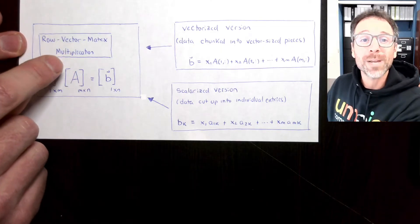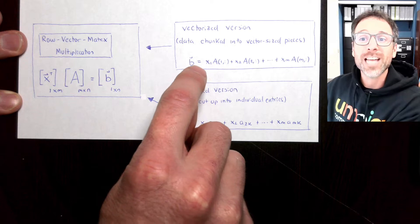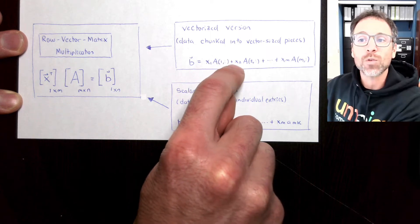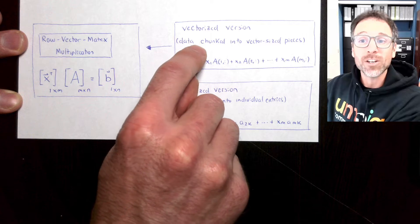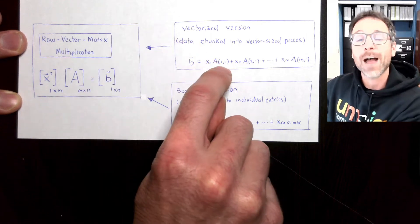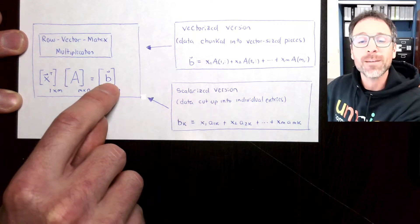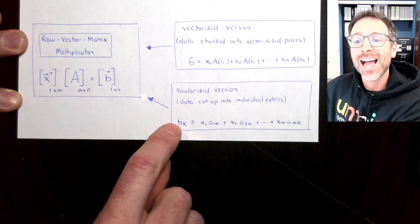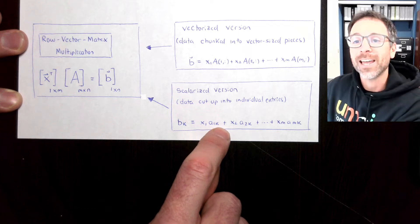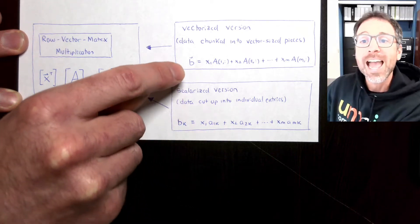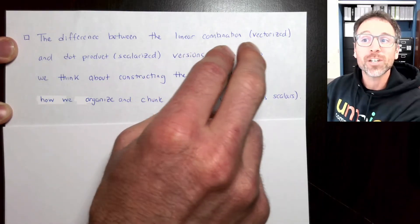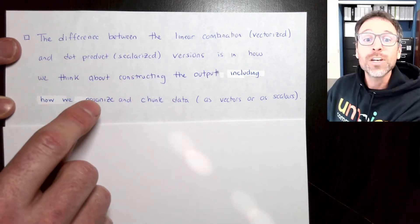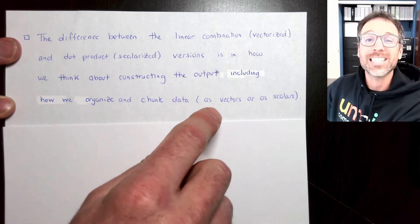We have a similar approach to row vector matrix multiplication. The vectorized version produces the output using scalar row vector multiplication and row vector addition — specifically, a linear combination of the rows of A. If we do a scalarized version and think about producing individual entries of the output vector B, then the k-th entry is a dot product between the vector x and the k-th column of A. So in the vectorized case we're looking at the rows of A, and in the scalarized case we're looking at the columns of A.